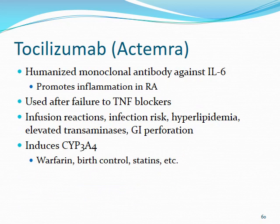Tocilizumab (Actemra) is a humanized monoclonal antibody against interleukin-6, which promotes much of the inflammation in RA. It can be used as a fallback after failure of TNF blockers. Unique adverse effects beyond the typical infusion reactions and infection risk include hyperlipidemia, elevated transaminases, and risk for GI perforation — distinguishing it from the other biologic agents.